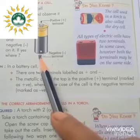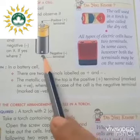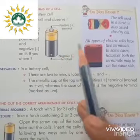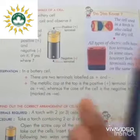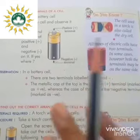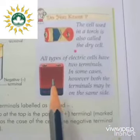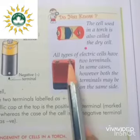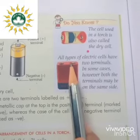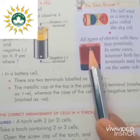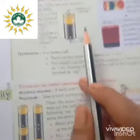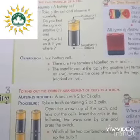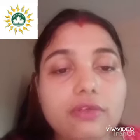Where there is no metallic cap, that is the negative terminal of the cell. The cells used in a torch are also dry cells. All types of electric cells have two terminals. In some cases, both terminals may be on the same side, as shown in this picture. However, this is very rare — generally, all cells contain the two terminals on opposite sides. In this way, we are able to locate the two terminals of a cell.